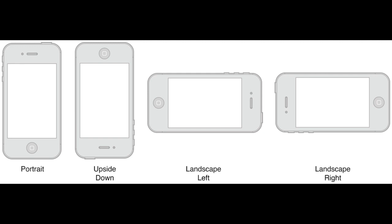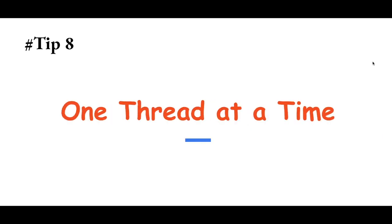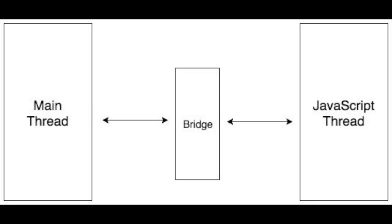The next tip is: one thread at a time. A challenge with the React Native framework is that it only allows you to render one thread at a time, meaning you cannot execute multiple tasks simultaneously. For example, if you want to implement live chat and live video simultaneously, you cannot do that — one task has to wait until the previous task is completed, serving only one function efficiently at a time. Keep this in mind and design accordingly.